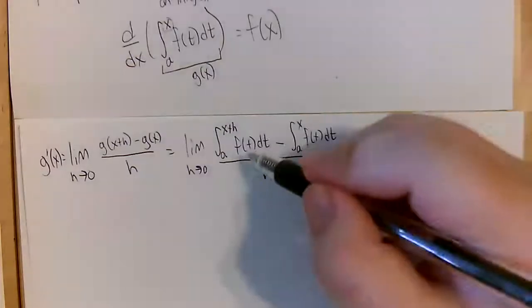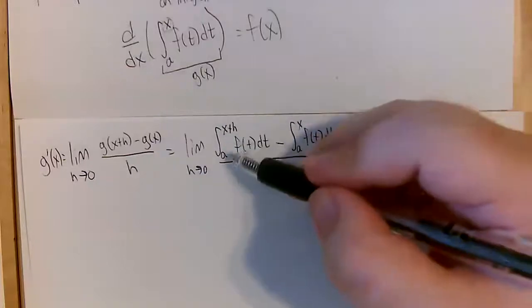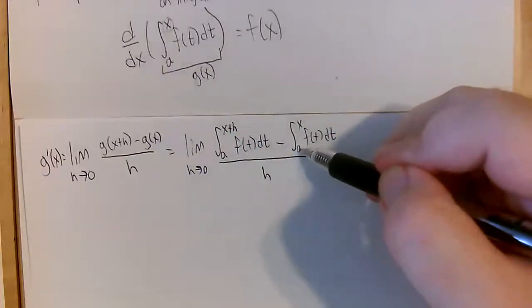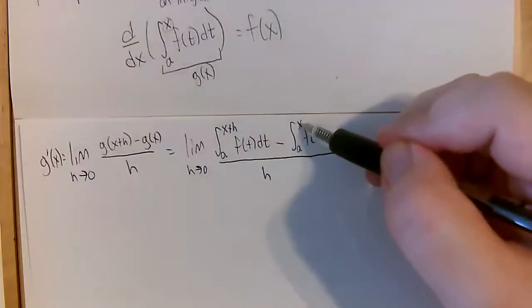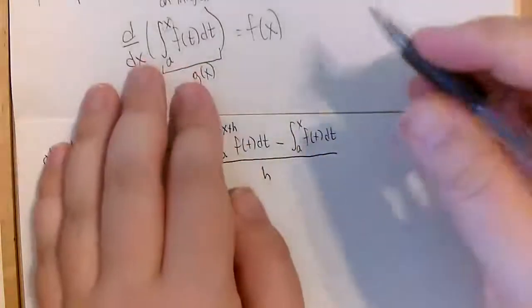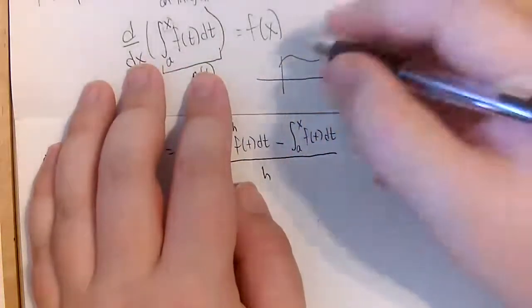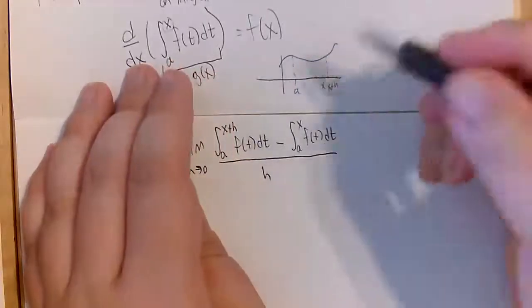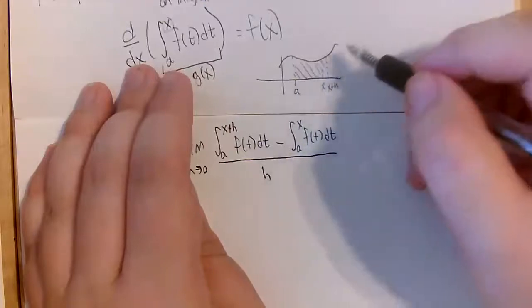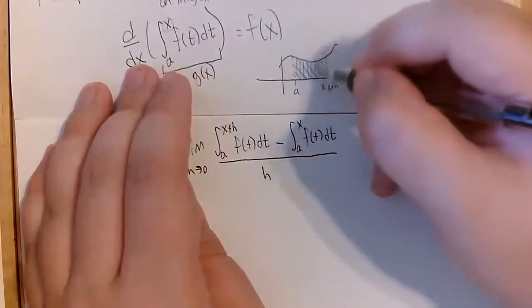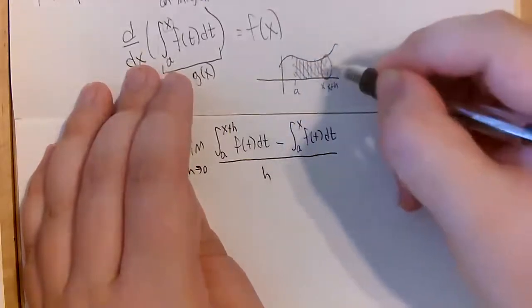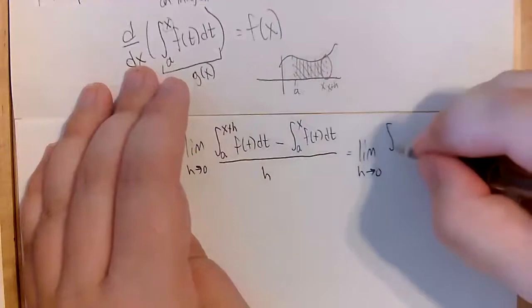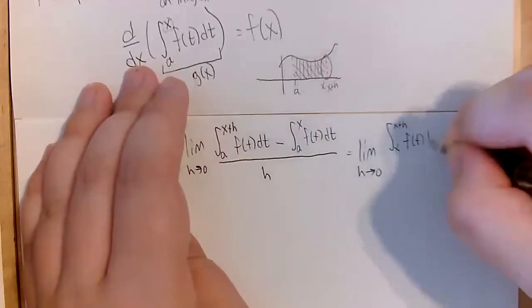Let's take a careful look. The first term is the signed area under the curve from a to x plus h, and we're subtracting the signed area from a to x. Geometrically: here's our function, here's a, here's x, and x plus h is a little further. The first integral covers all the area from a to x plus h, and the second takes away the area from a to x. What we're left with is a tiny strip of area from x to x plus h. So the numerator simplifies to the integral from x to x plus h of f of t dt.